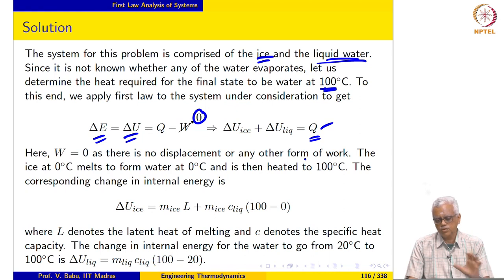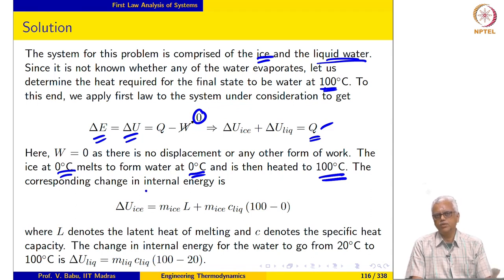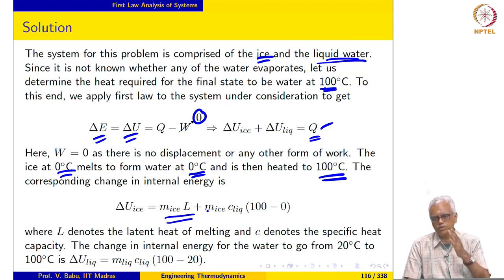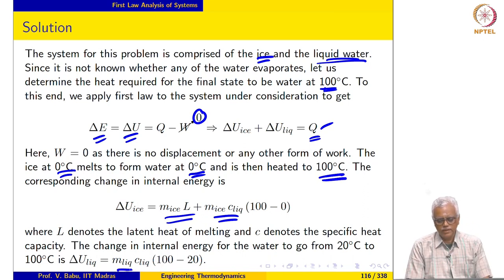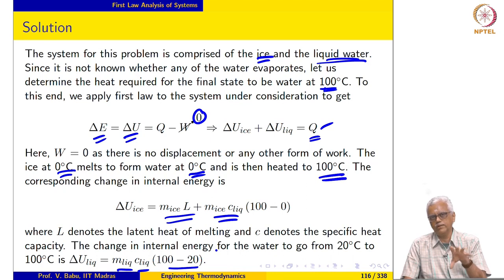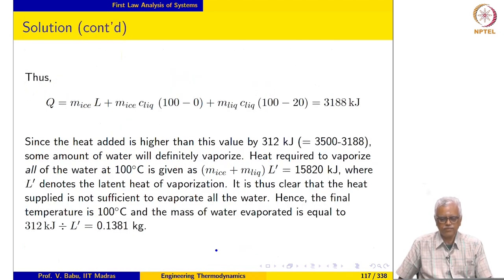For the ice: it melts at 0 degrees Celsius and is then heated to 100 degrees Celsius. The change in internal energy includes the latent heat to convert ice to water at 0 degrees Celsius, plus the heat to raise it to 100 degrees. For the liquid water, initially at 20 degrees Celsius, delta U equals m_liquid times specific heat capacity times the temperature change of 100 minus 20. Substituting the numbers, the total heat required comes out to be 3188 kilojoules.